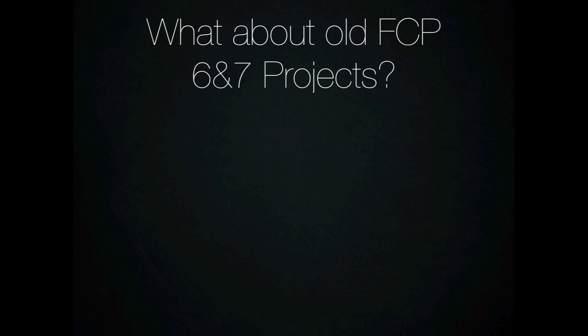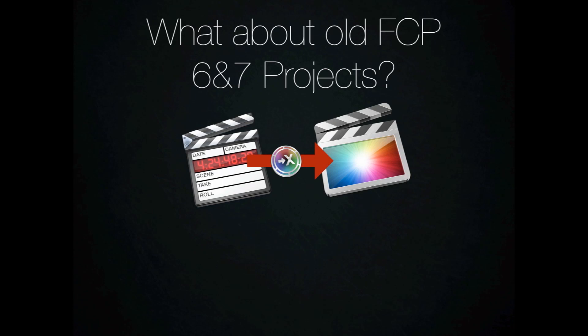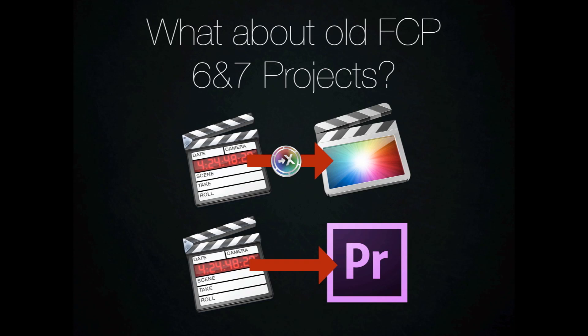Another question you might ask is what about old Final Cut Pro 6 and 7 projects. Don't worry — when Final Cut Pro 10 first came out, there was a big complaint that you couldn't upgrade projects from FCP 6 or 7. There is a small $10 application called X to 7 and 7 to X that allows you to go back and forth between the two. Adobe Premiere Pro also supports importing Final Cut Pro 7's XML format, so it can automatically import that footage right off the bat.